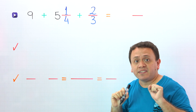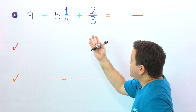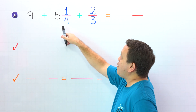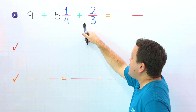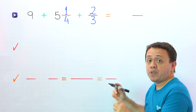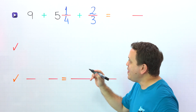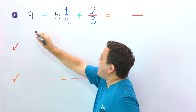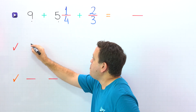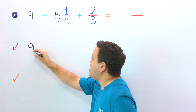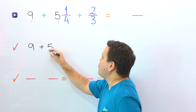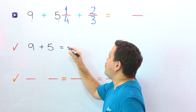Are you ready for the example? In the first example, we need to add 9 plus 5 and 1 fourth plus 2 thirds. To find the sum, first we add the whole numbers, and the whole numbers are 9 and 5. Come over here — 9 plus 5 equals 14.